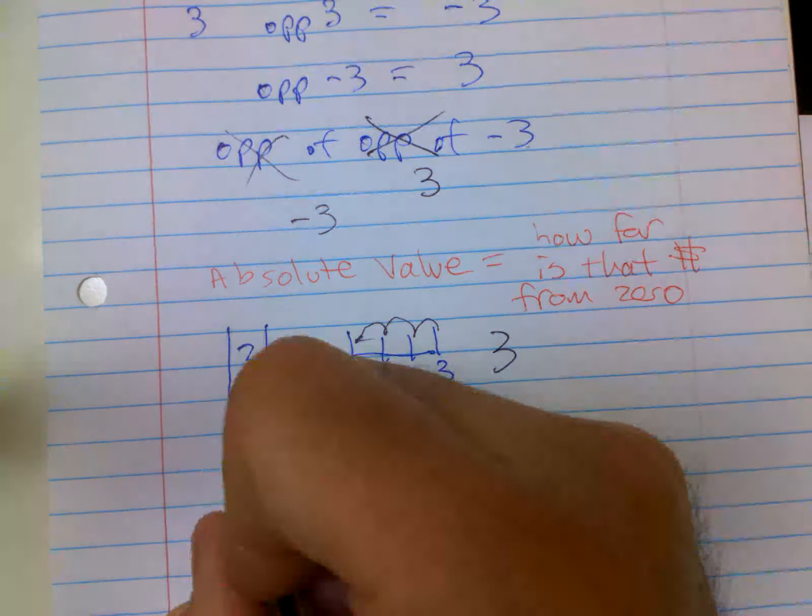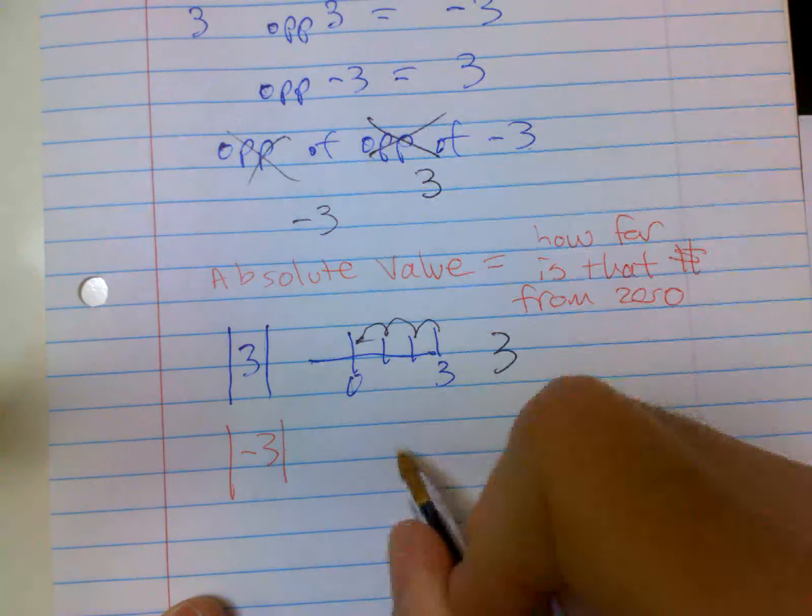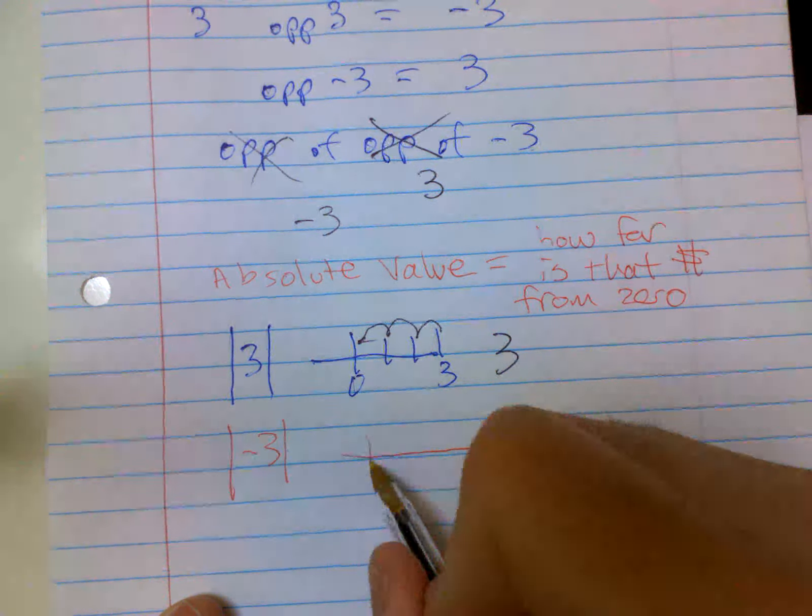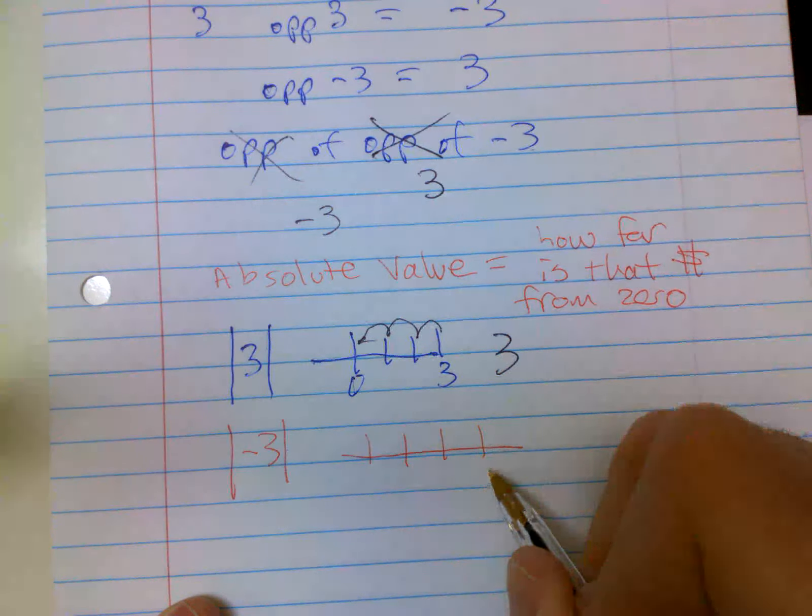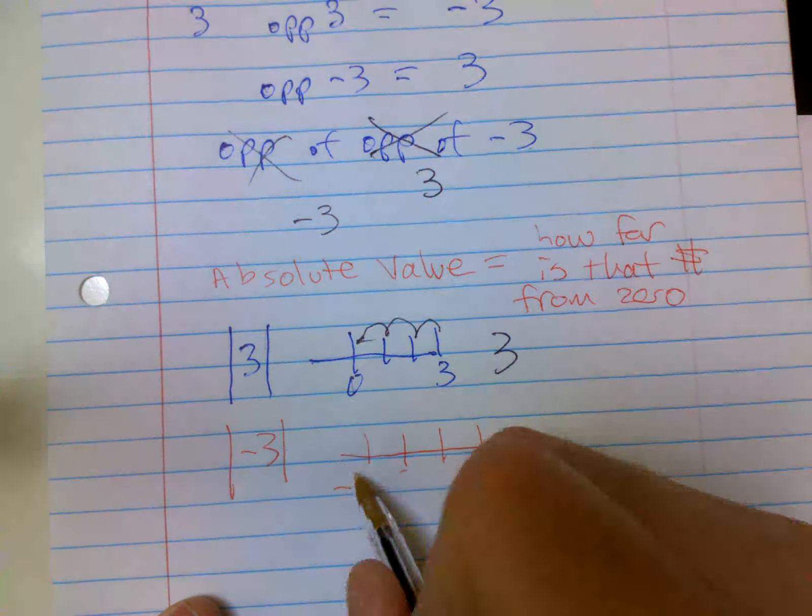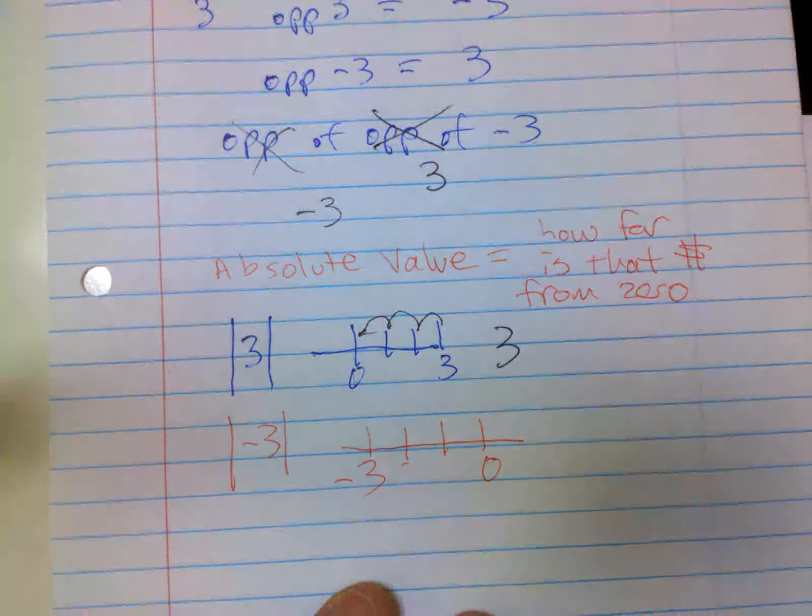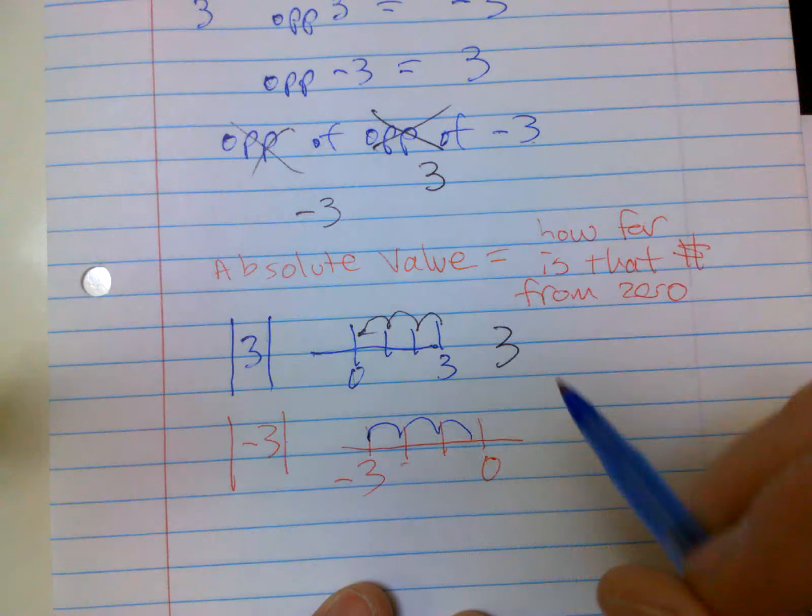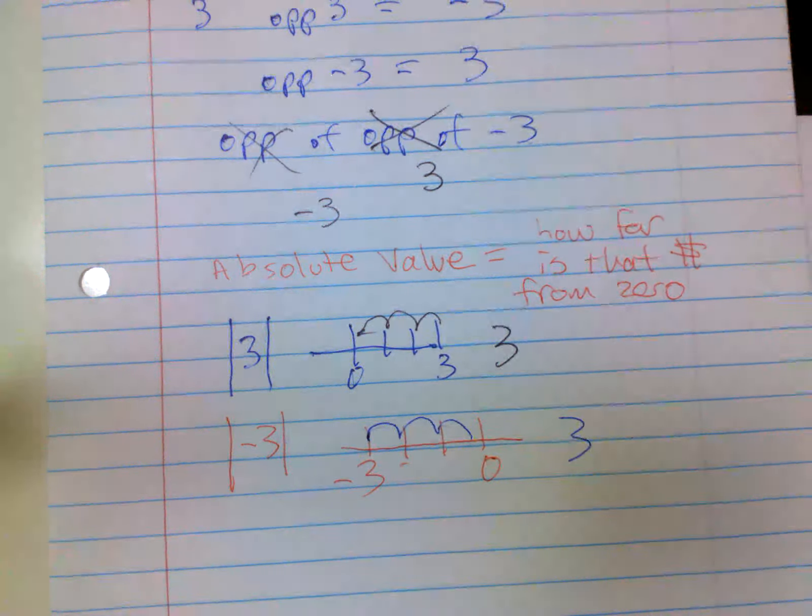So how far is negative three from zero? I'm sorry, you guys, I talk this way when I think things are pretty simple, easy, and like baby basic. One, two, three. Here's negative three. How far is it? Well, it's one, two, three. So it also is three.